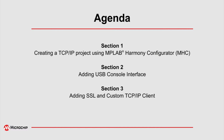In order to achieve this, the video is divided into three sections. In section 1 we will be creating the TCP/IP project using MHC. In section 2 we will be adding the USB console interface, and in the last section we will be adding the SSL library and the TCP/IP custom client applications.